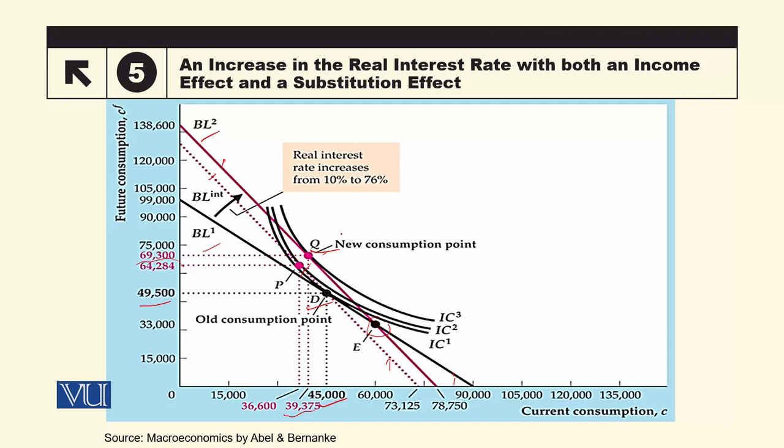P سے Q پر جاتے ہیں تو current consumption میں بھی اضافہ ہو جاتا ہے اور future consumption میں بھی اضافہ ہو جاتا ہے — اس لیے کہ ہم assume کر رہے ہیں کہ current اور future دونوں consumption normal goods ہیں، جب بھی income بڑھے گی تو ان دونوں میں اضافہ ہو جائے گا۔ So P سے Q کی movement یہ income effect ہے اور D سے P تک کی movement یہ substitution effect ہے۔